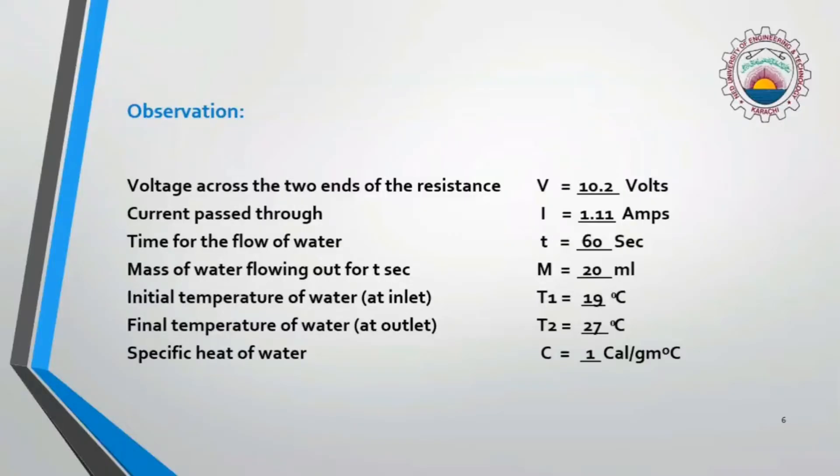Time for the flow of water is 60 seconds, that is 1 minute. And mass of water flowing for T second is 20 ml. As I have discussed in the procedure, we have set the nozzle on 20 ml per minute flow rate.